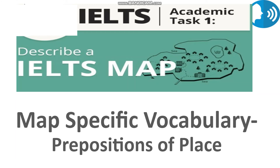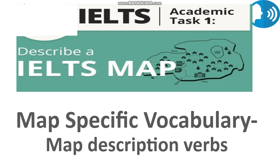Another very useful map-specific vocabulary is the use of prepositions of place. Here are three important advanced prepositions of place: 'perpendicular to,' which means at right angles to; 'clockwise,' which means following the rotating direction of the clock hands; and 'along,' which means nearby. Use these prepositions of place liberally to help explain the map in a better way.